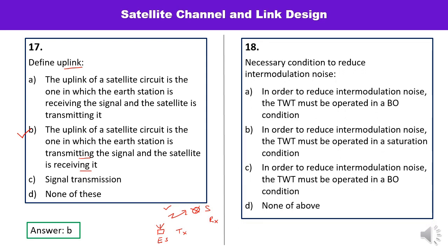Question number 18: what is the necessary condition to reduce intermodulation noise? Intermodulation noise can be reduced if and only if traveling wave tubes are operated in back-off (BO) condition.